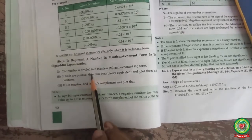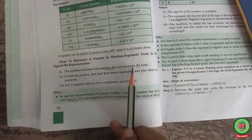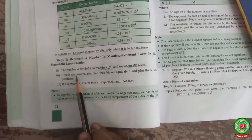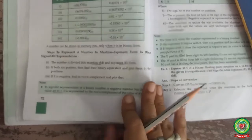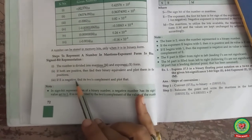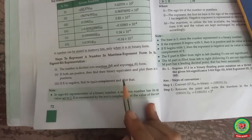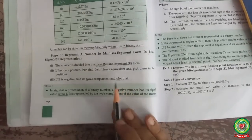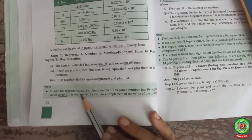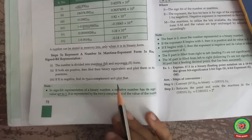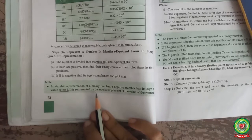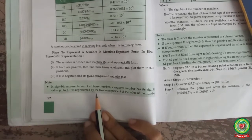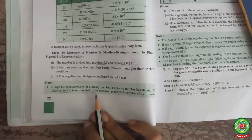Step 1: The number is divided into mantissa and exponent form. Step 2: If both are positive, then find their binary equivalent and plot them in the bit positions. Step 3: If E is negative, then find the two's complement and plot that. It is important to note that in signed bit representation of a binary number, a negative number has its sign bit value set to 1 and is represented by two's complement of the value of the number.